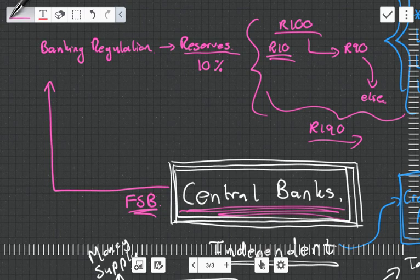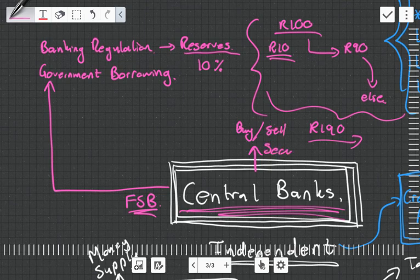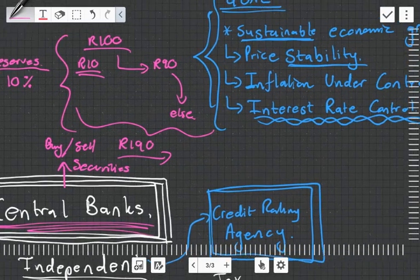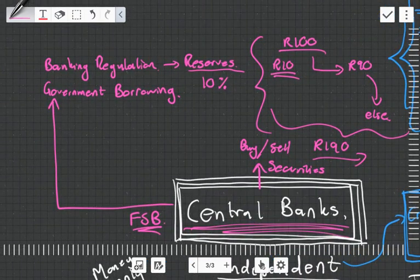So yeah, they do banking regulations. They also implement government borrowing. So if the government wants to issue a bond or needs to raise money, they will do it through the central bank. The central bank can therefore buy and sell securities. Okay, they buy and sell securities. And I mean, when they buy back securities, they're pumping money into the system. When they're selling securities, they're absorbing money and they're controlling the money supply. So this is like another technique that they can use to control inflation. Like I said, interest rate control is their main one, but they can do a whole bunch of other things to control the money supply.